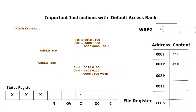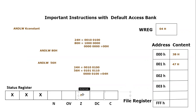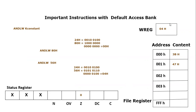The result of the AND operation is 0x04, so the new value inserted into the working register will be 0x04. Since the result is not zero, the zero flag will remain 0. I hope you have understood the concept of the ANDLW instruction. If you have any confusion or questions, you can post them in the comment section. Thank you so much for listening.